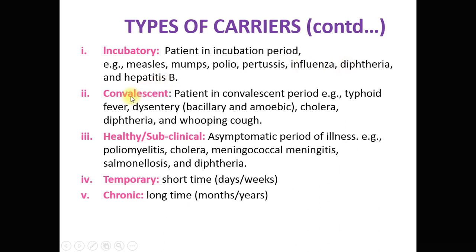Convalescent carriers are patients in the convalescent period — the period of recovery — for example, typhoid fever, dysentery (bacillary and amoebic), cholera, diphtheria, and whooping cough. Healthy or subclinical carriers are in the asymptomatic period of illness and are quite dangerous for society — for example, poliomyelitis, cholera, and meningococcal meningitis. Temporary carriers remain carriers for a short time, days or weeks, while chronic carriers are long-term carriers, remaining so for months or sometimes years.